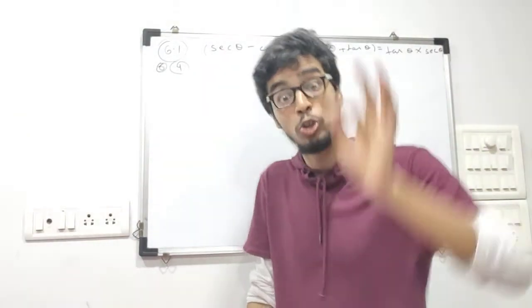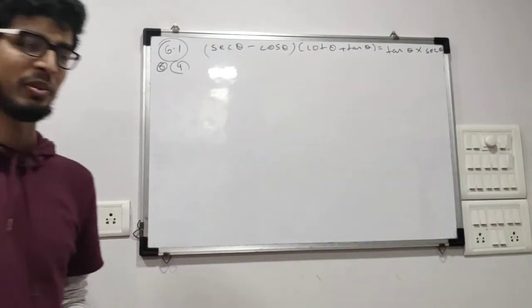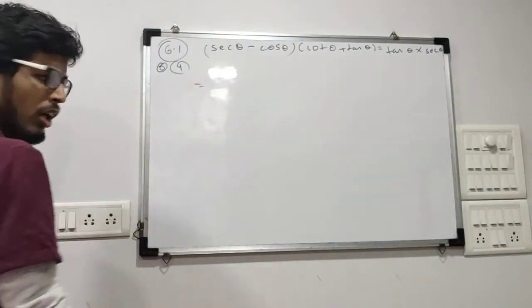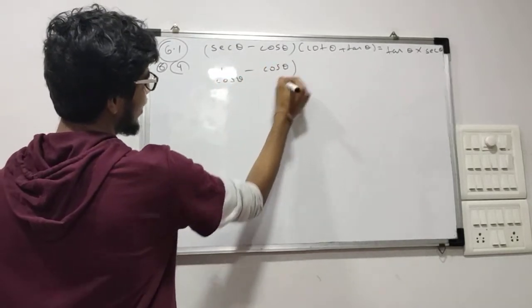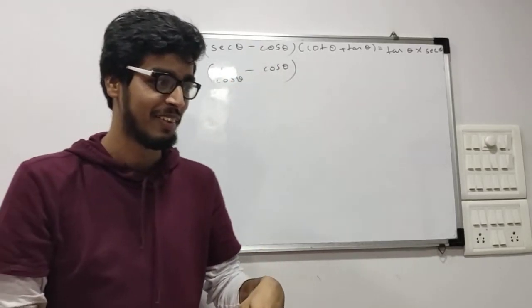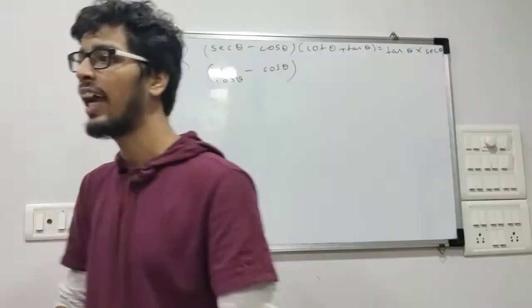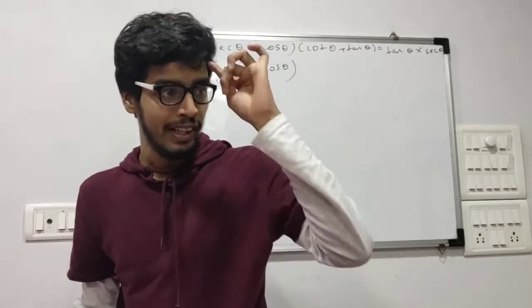I always tell you — the bigger the question, the easier it is. Because if the question is big, a lot of information is given; if the question is small, the information given is small. Look at LHS carefully and keep one thing in mind — convert to sin and cos. So how do you read sec theta? It's 1 upon cos theta. Be very clear with this.